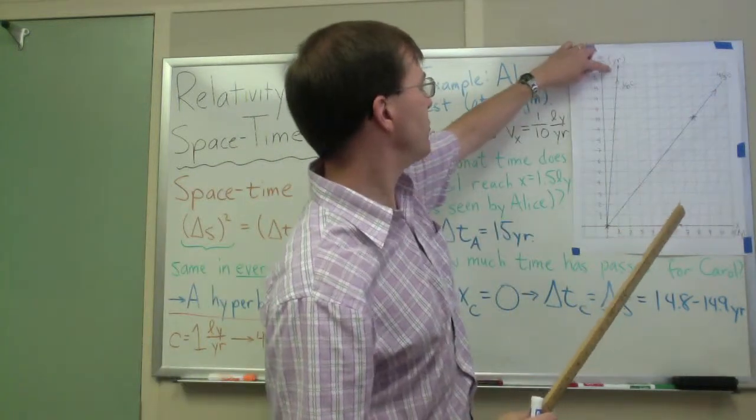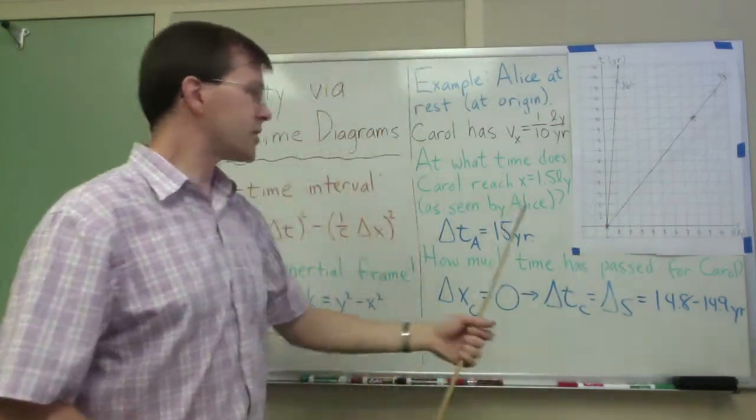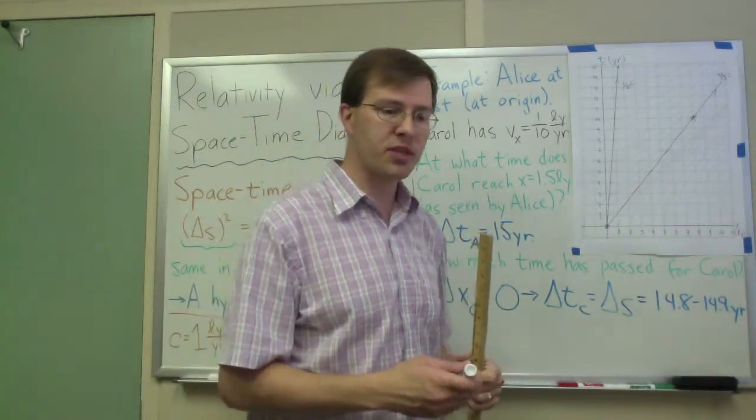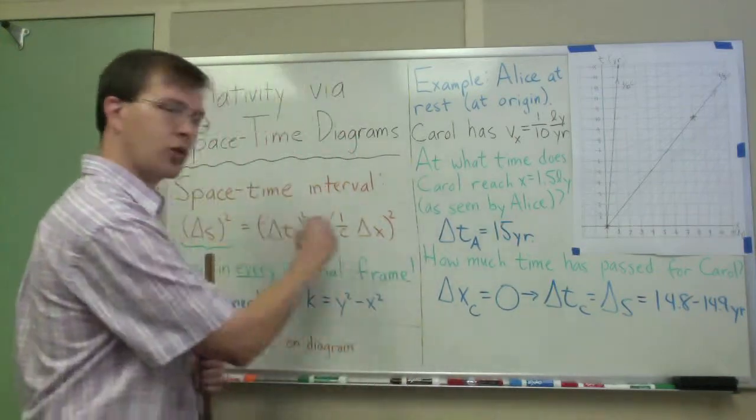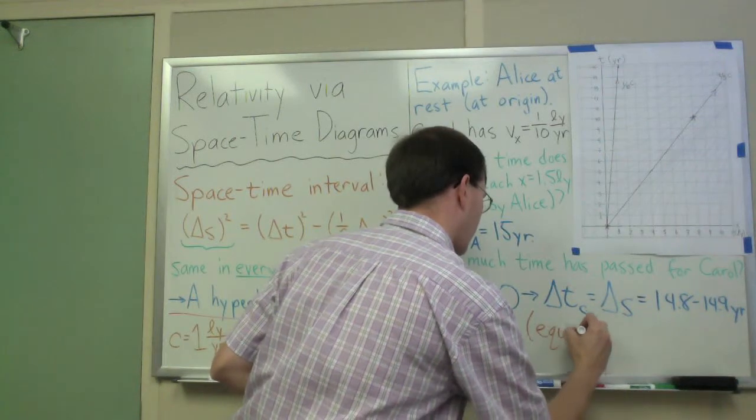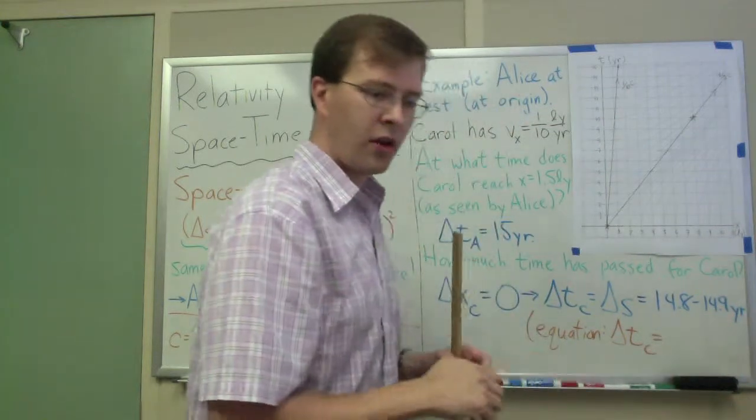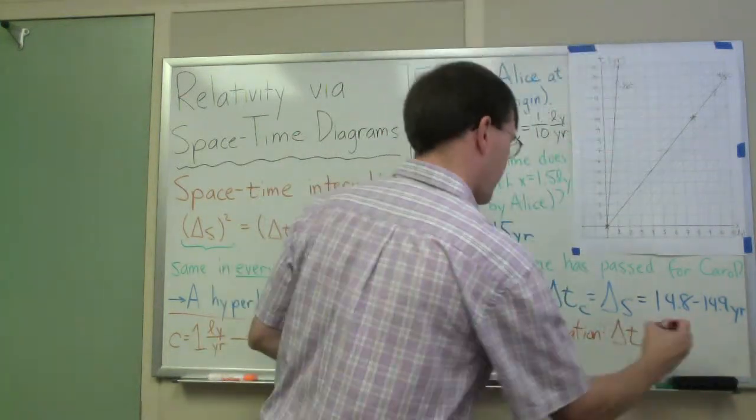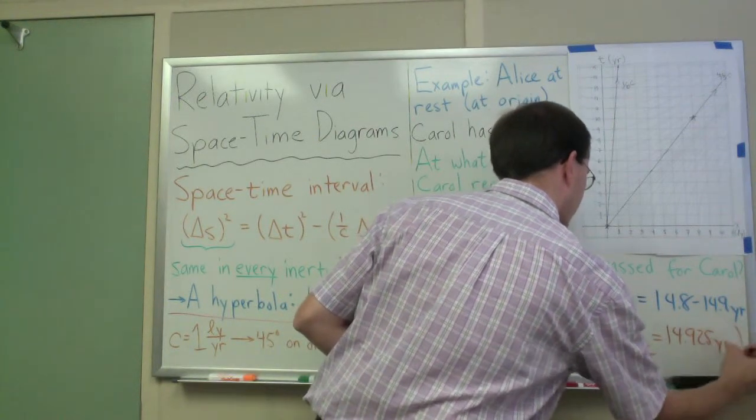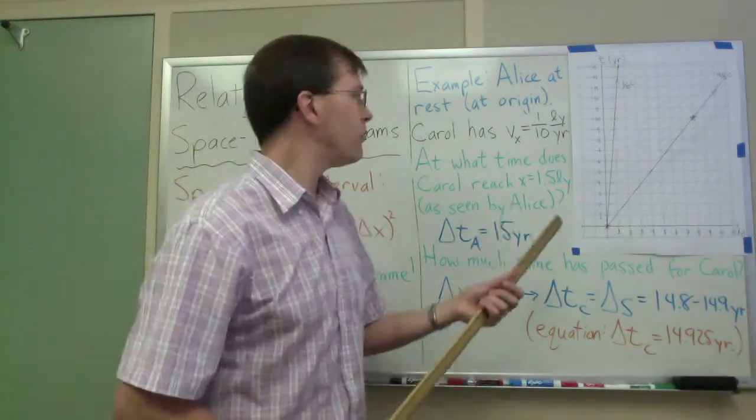Somewhere in that range is what I'd say. It's clearly less than 15 years, but definitely more than 14.75. So I've read that off directly from here. When I do the calculation explicitly using the equation, I get delta t as measured by Carol of 14.925 years. So eyeballing it has come out really close to the right answer. It's not perfect, you can tell, but it comes out well.